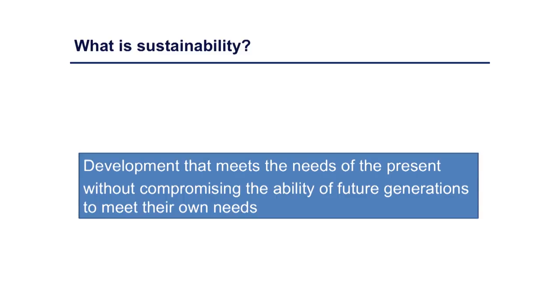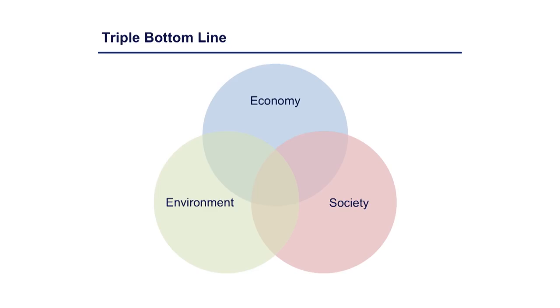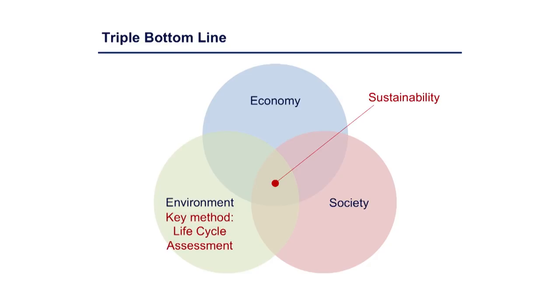A little bit of context — what is sustainability? The most common definition is development that meets the needs of the present without compromising the ability of future generations to meet their own needs. Implicit in this is the idea of the triple bottom line: we need to focus on the economy, on society, and on environment. Environment can be a limiting factor in meeting those needs today and tomorrow, and it's in that third category where life cycle assessment comes into play.